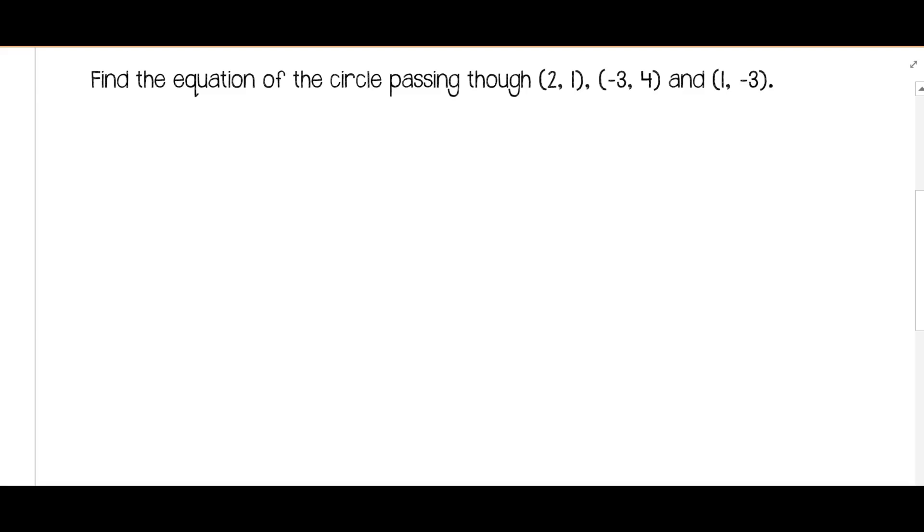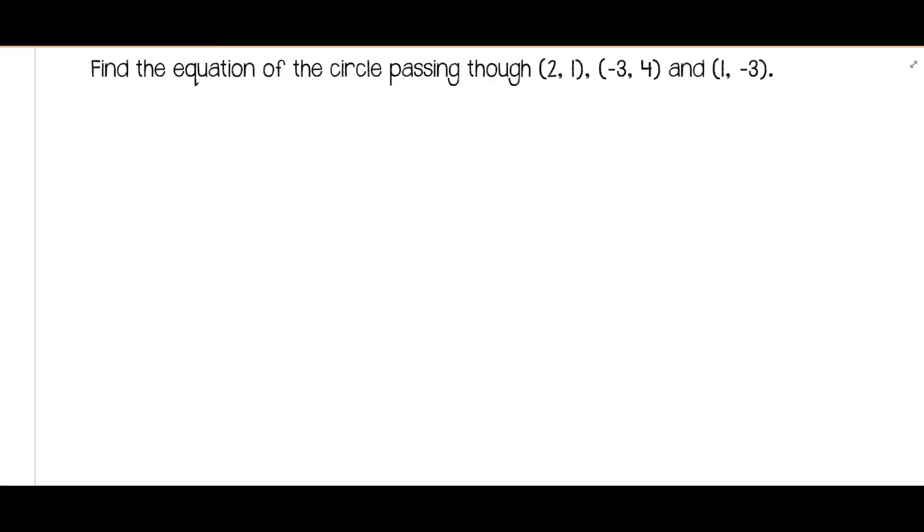So let's talk about the general form of a circle for a conic. Our general form is x squared plus y squared plus cx plus dy plus e is equal to zero. You'll notice our coefficients of x and y are both one and we don't have that x, y term that you would normally have in the general form because it's a circle.